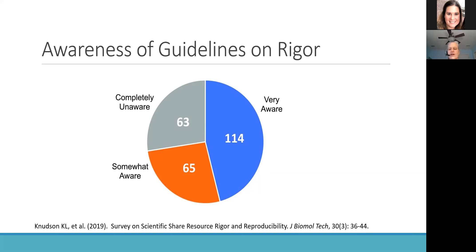Our academic institutions and other research institutions have worked very hard to make their faculty and researchers aware of these changes. The core facilities, such as are present in all the CCCRs, can be thought of as the boots on the ground for improving and enhancing scientific rigor through their service, support, and education of researchers. A study by Knudsen et al. was examining awareness of NIH guidelines on scientific rigor conducted among researchers with access to core facilities.